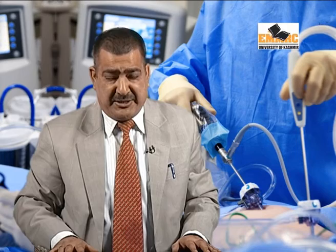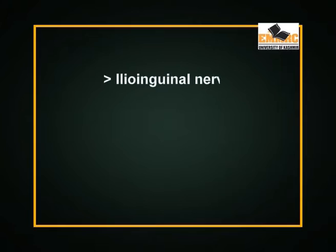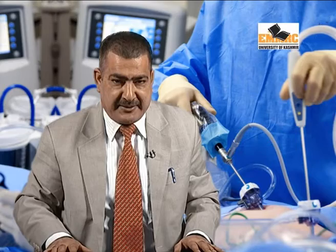In the open approach we are familiar with structures like the ilioinguinal nerve, inguinal ligament, pubic tubercle, and lacunar ligament. Whereas in the laparoscopic approach, we see the iliopubic tract and Cooper's ligament. One has to get familiar with this anatomy — that's the crux of today's lecture.